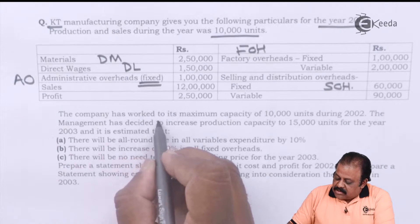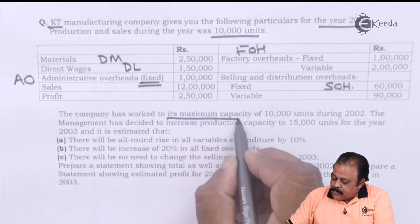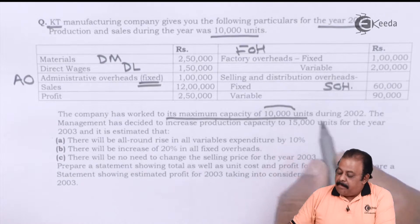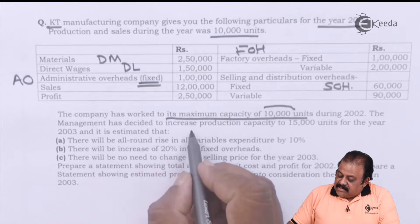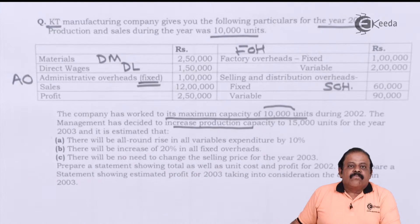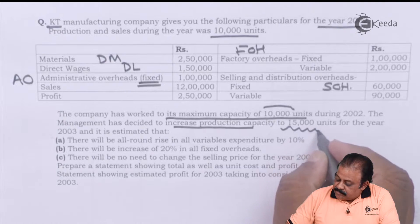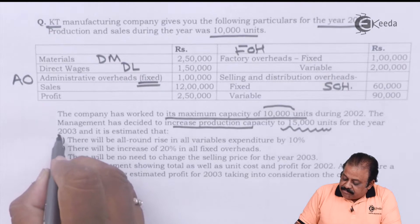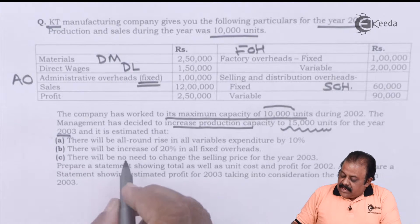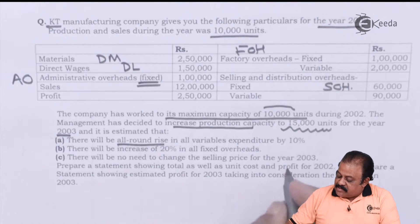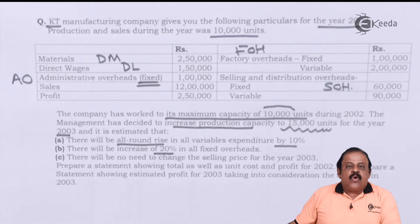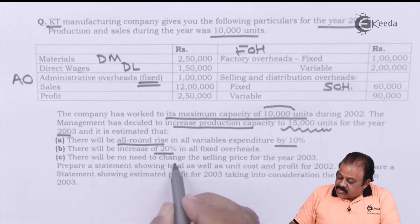The company has worked to its maximum capacity of 10,000 units, so current year production is 10,000 units — that is the maximum capacity. The management has decided to increase the production capacity to 15,000 units for the year 2003. It is estimated that there will be an all-round rise in all variable expenses by 10 percent, and there will be an increase of 20 percent in all fixed overheads.